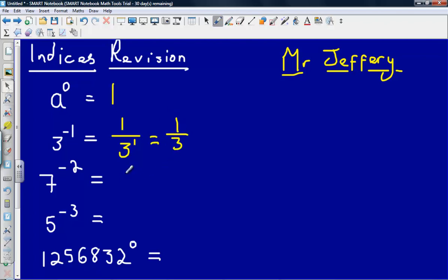Next one, we've got seven to the power of minus two, again we can write this as one over seven squared, and so then we could write that as one over forty-nine.